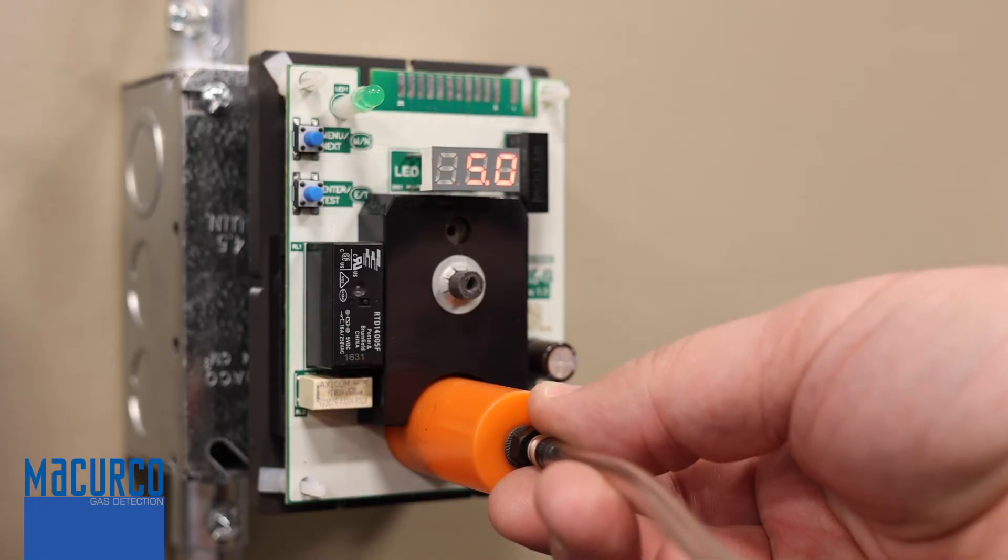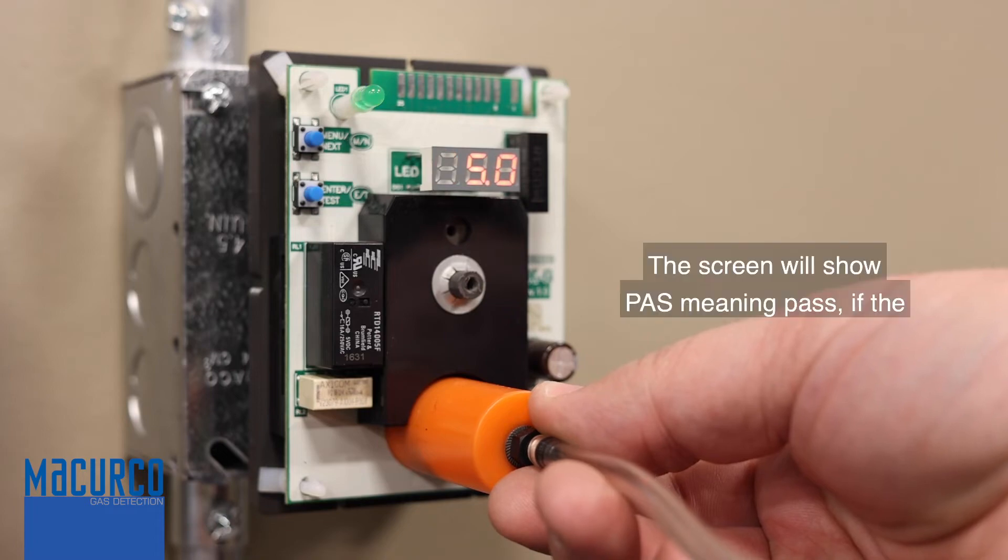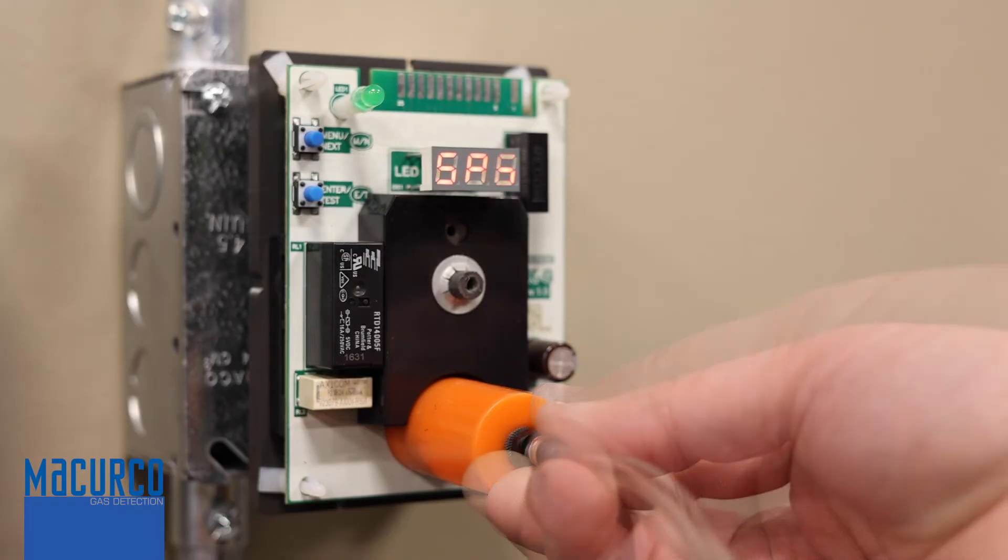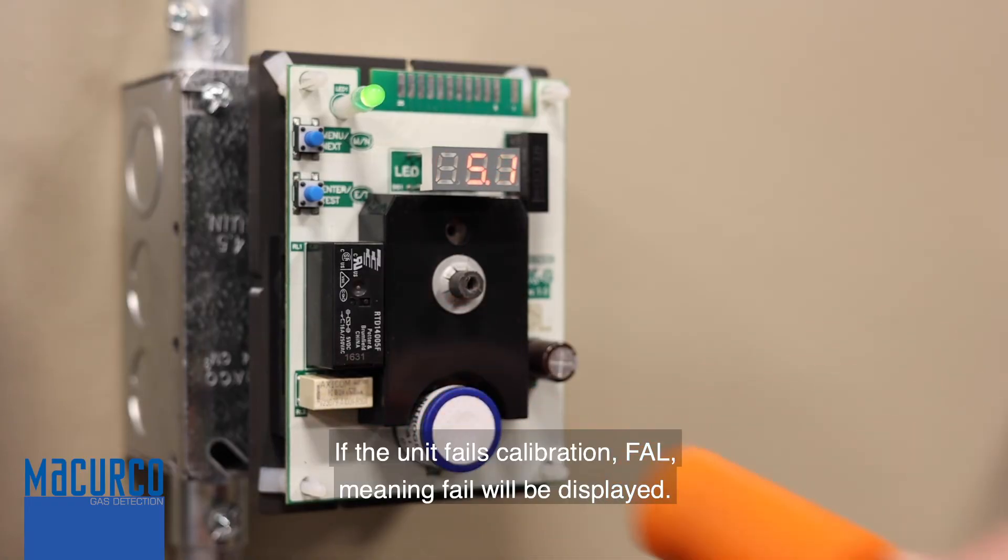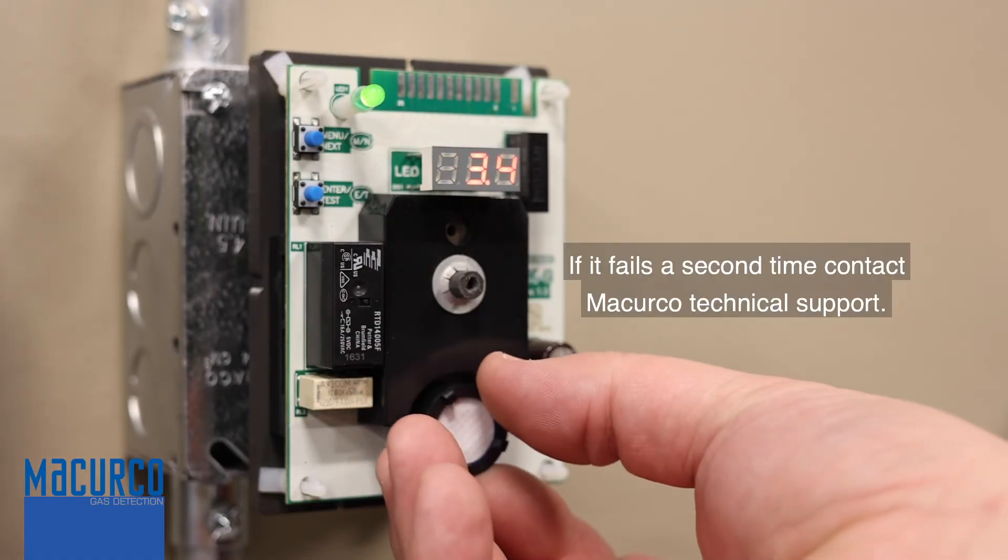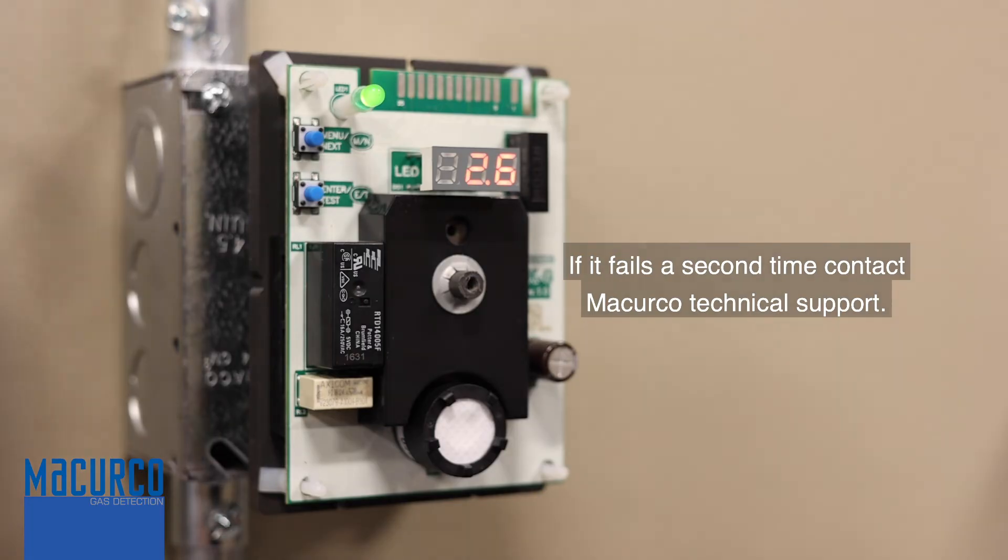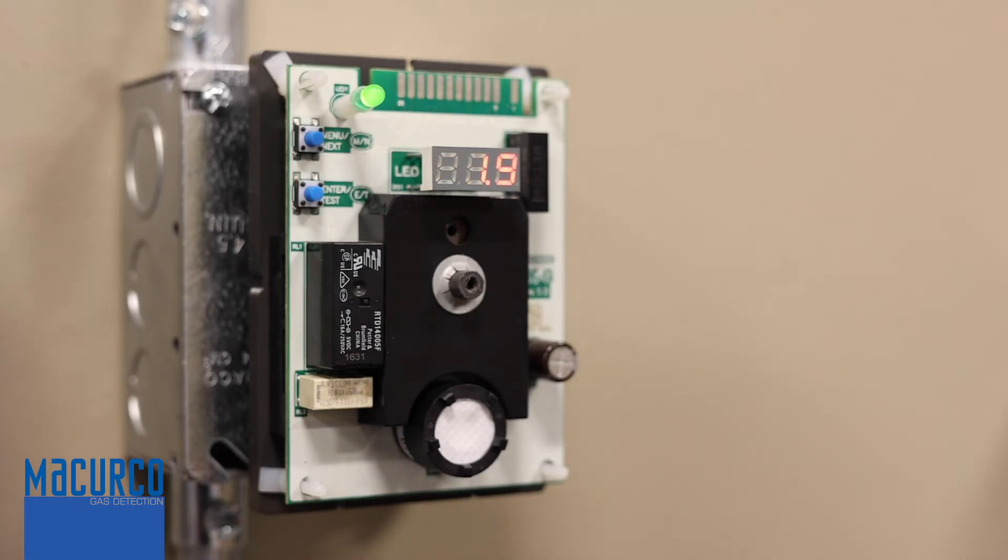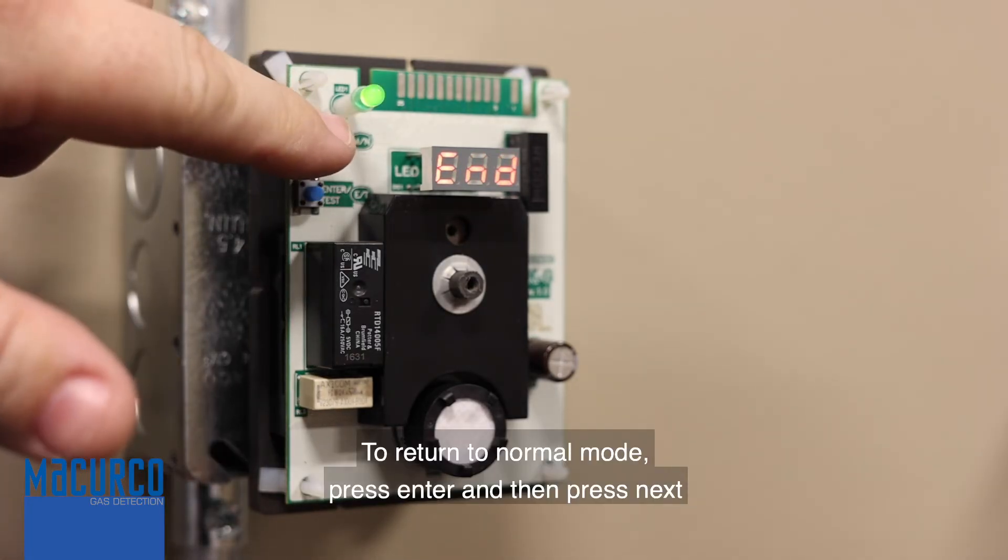The screen will show pas, meaning pass, if the calibration is successful. If the unit fails calibration, fal meaning fail will be displayed. If it does fail, repeat the steps over from the beginning. If it fails a second time, contact Macurco technical support. To return to normal mode, press enter and then press next until end is displayed.